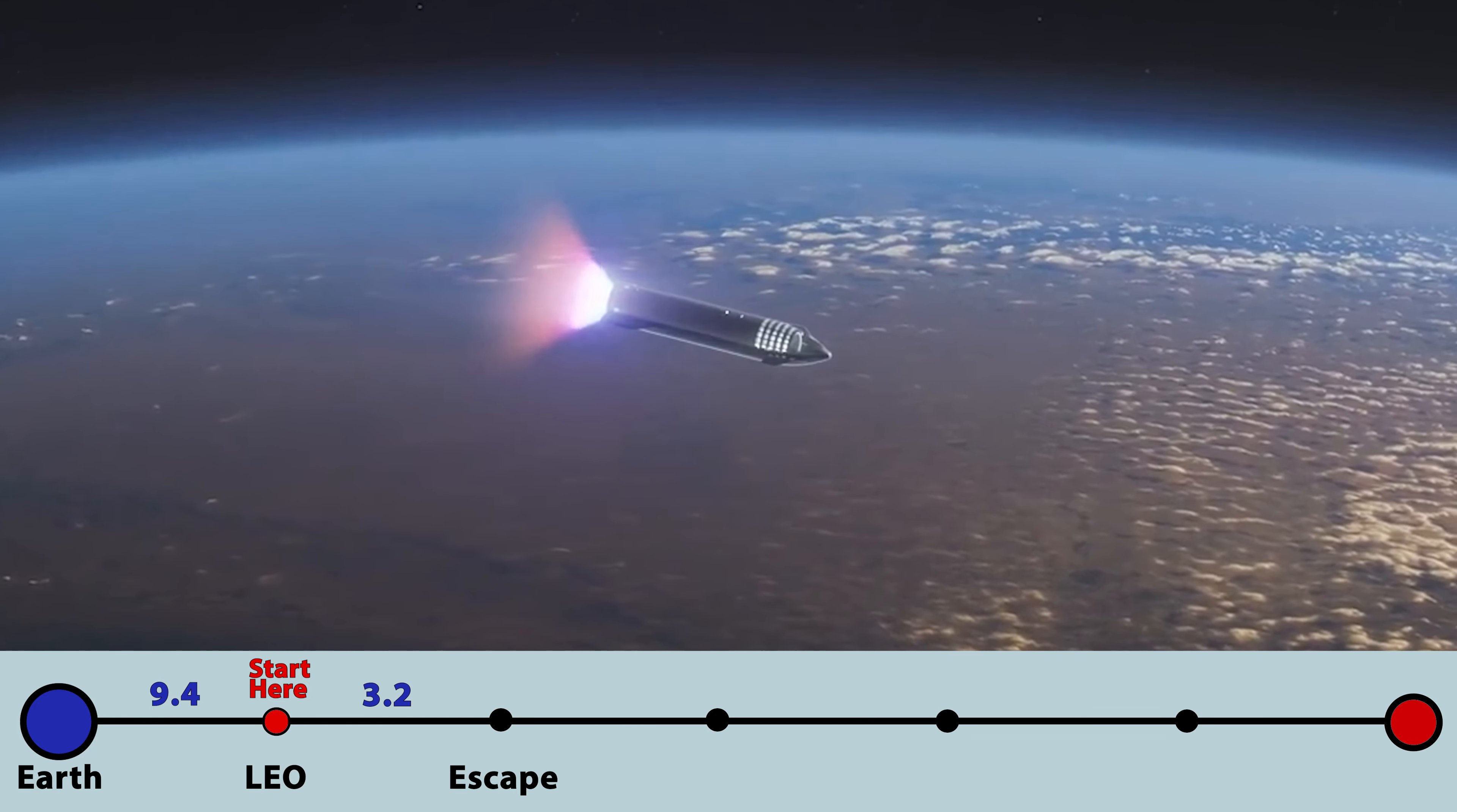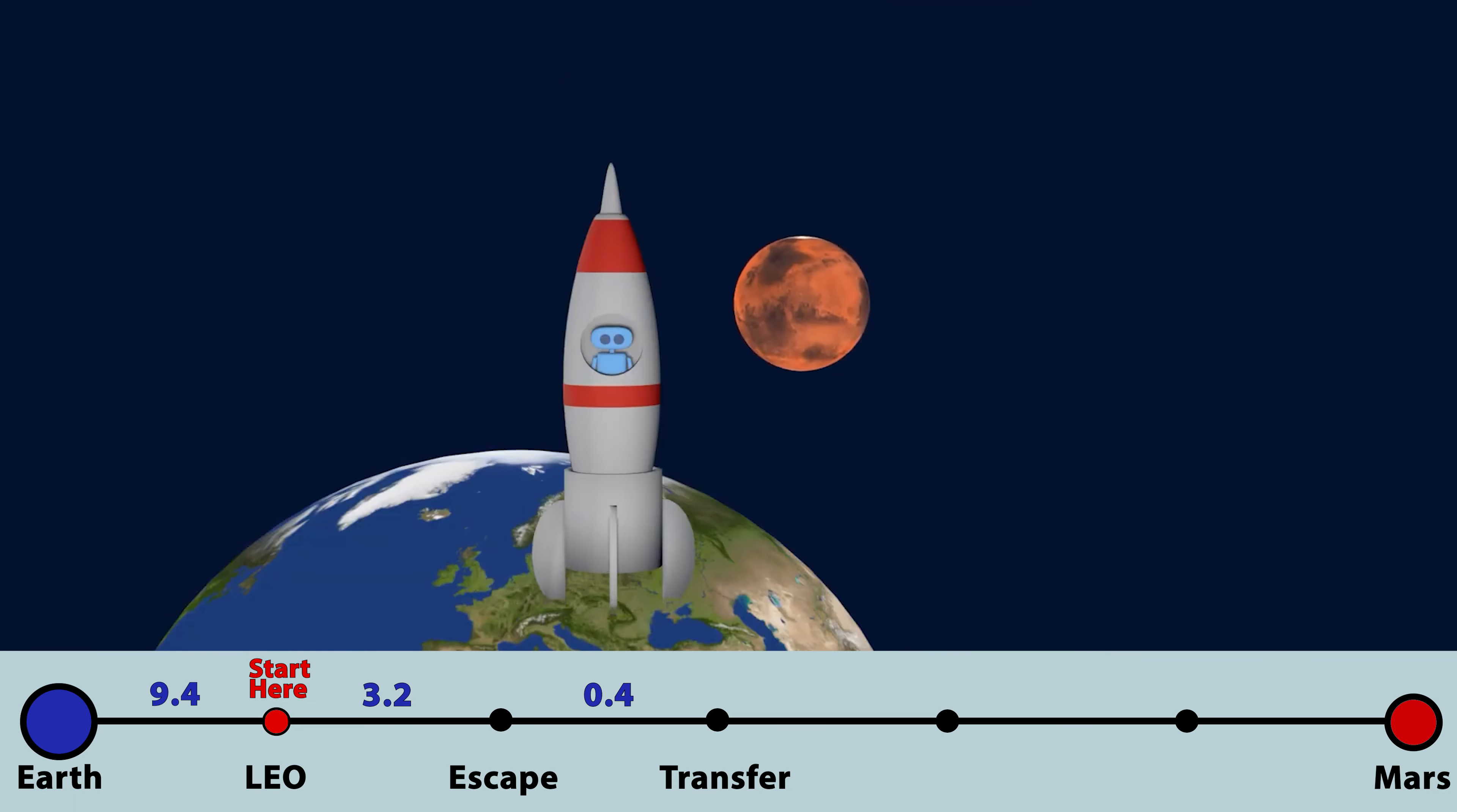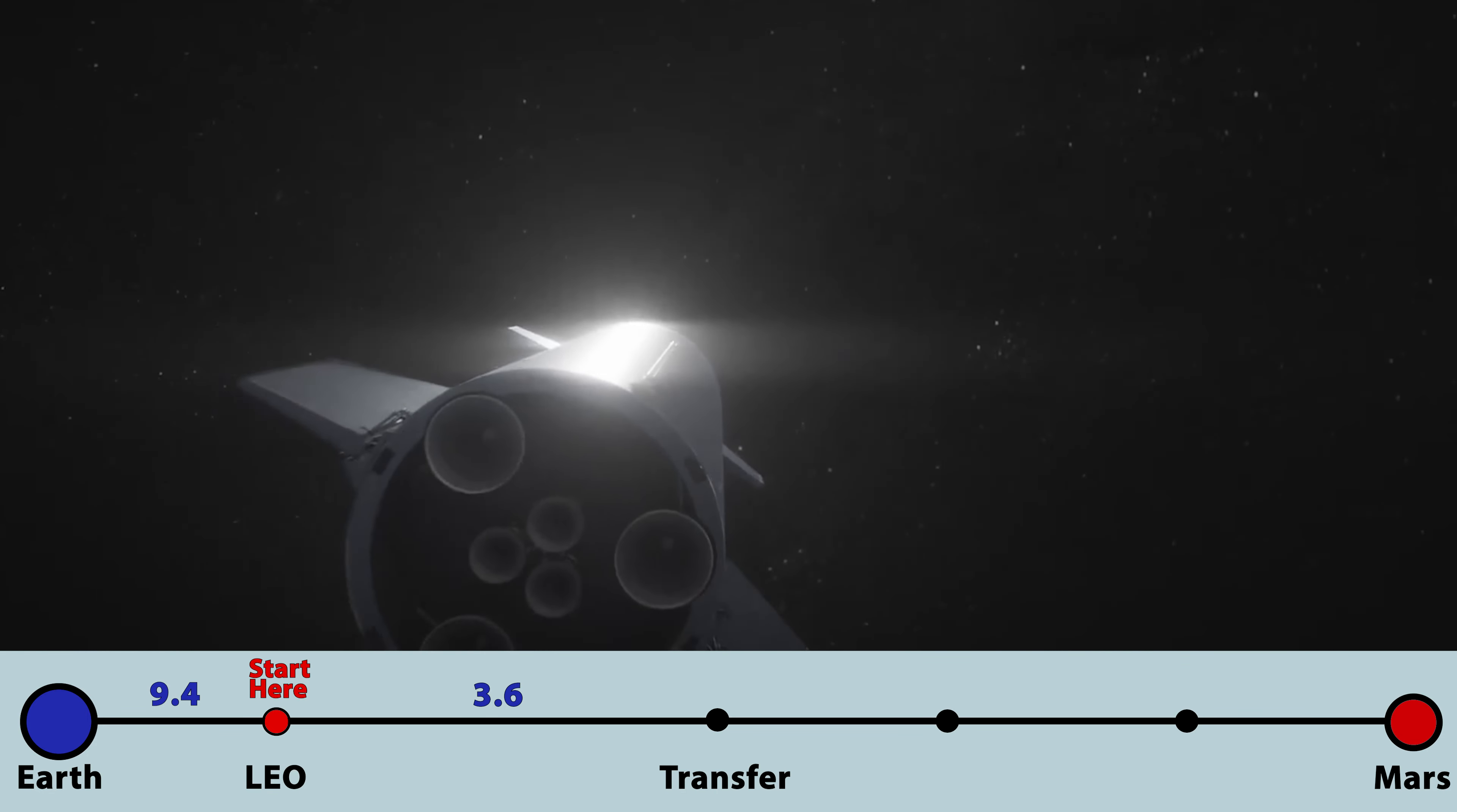The burn to achieve Earth's escape velocity from low Earth orbit requires a delta-v of 3.2 kilometers per second. But this velocity isn't enough to get to Mars. Escape velocity alone would leave us orbiting the Sun right next to Earth. We'll need a small additional boost beyond escape velocity to climb higher in the Sun's gravity well and reach Mars's orbit where, if we planned everything out properly, Mars will be waiting for us.